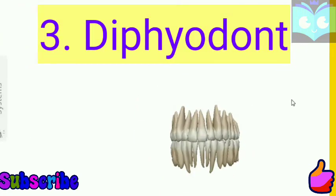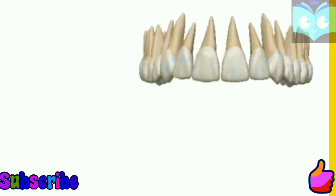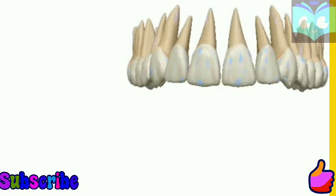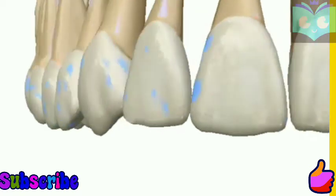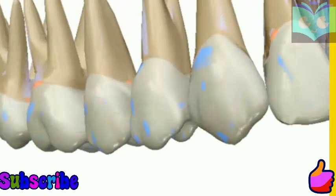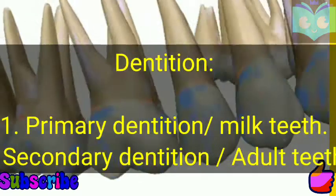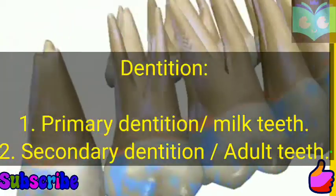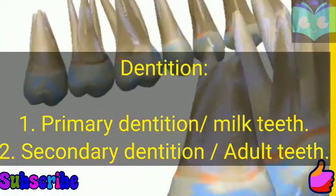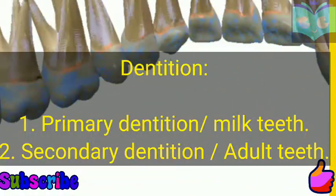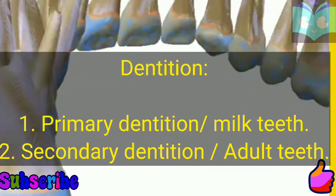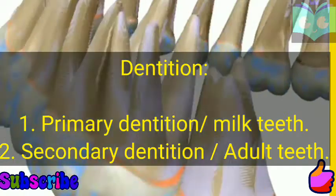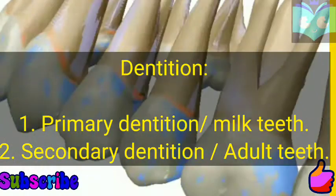The third type is Diphyodont, which means that our teeth occur in two sets. The first is known as primary dentition or milk teeth, and the second is known as secondary dentition or adult teeth.